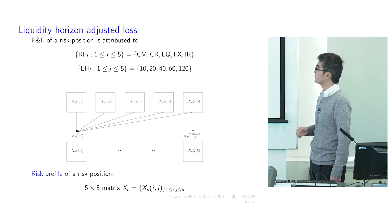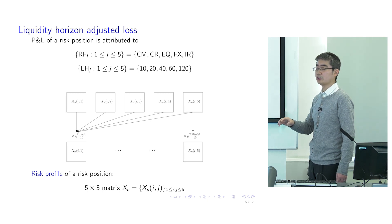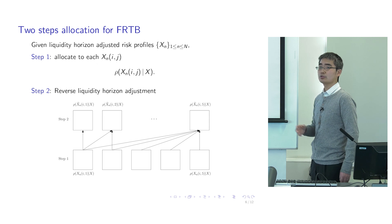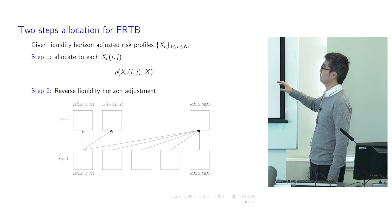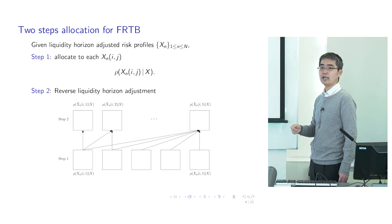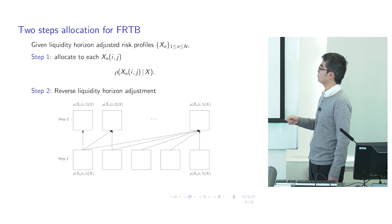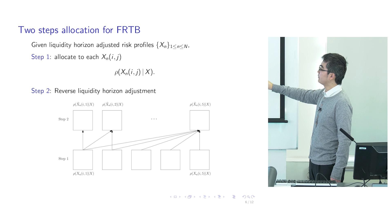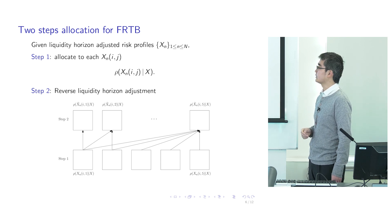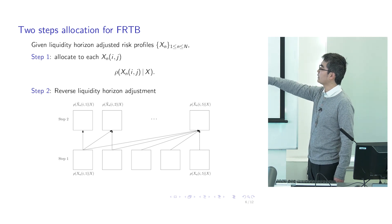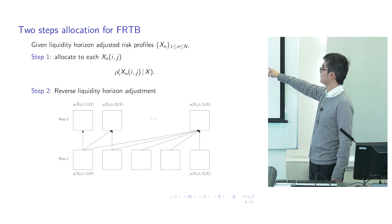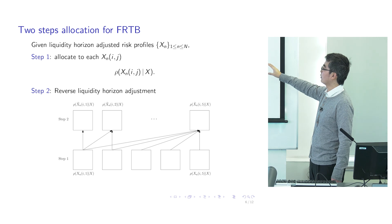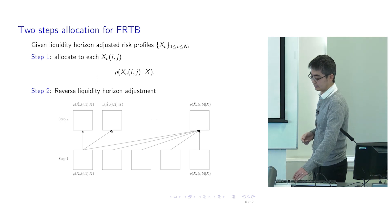Each element of the risk profile is the liquidity horizon adjusted profit and loss allocated to that specific bucket. Due to this liquidity horizon adjustment, in both of our allocation methods we follow two steps. First, we start with the bank's global capital requirement and allocate it to each risk position, each liquidity horizon, and each risk factor class. In the second step, we reverse the liquidity horizon adjustment. As a result, the shortest liquidity horizon bucket will have only one contribution, while the longest liquidity horizon bucket will have contribution from five buckets of different liquidity horizons, so it will have more contribution in its capital allocation.